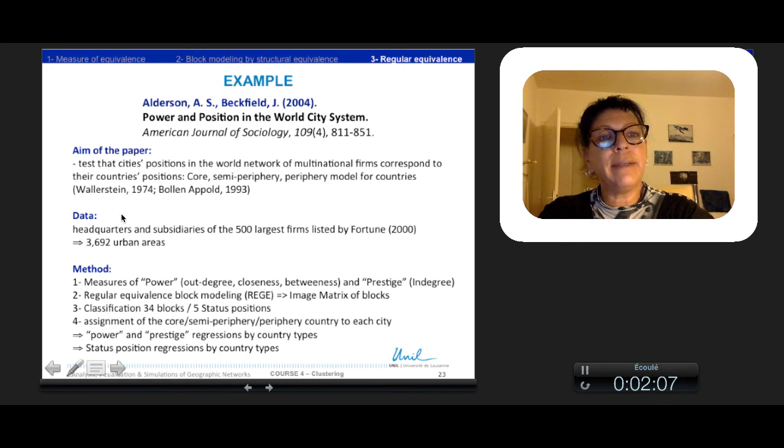They have data on headquarters and subsidiaries of the 500 largest firms listed by Fortune, and all these headquarters and subsidiaries are located in 3,692 urban areas. They have four different steps that I will detail now.